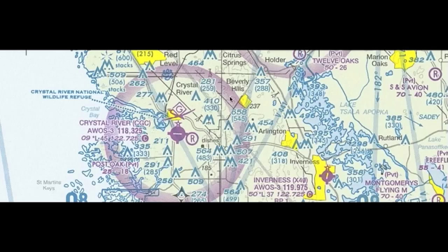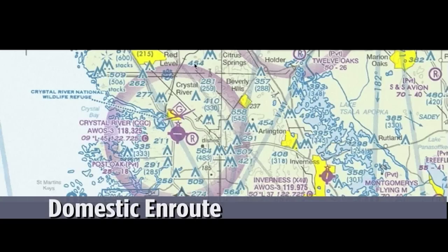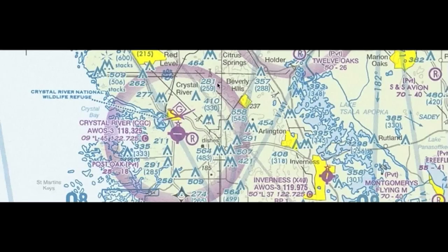Class E airspace starts at 700 feet AGL. Anytime you're outside of this, in what's known as domestic en route — everything else out here that's not inside one of these magenta circles — it starts at 1200 feet AGL. So again, inside of here: 700 feet. Outside of it, unless otherwise indicated or another type of airspace, it's going to start at 1200 feet.